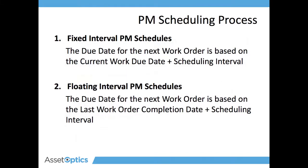There are two types of calendar-based PM schedules: fixed interval and floating interval. For a fixed interval PM schedule, the due date for the next work order is based upon the due date for the existing or current work order plus the scheduling interval. For a floating interval, the due date for the PM is going to be based upon when the last work order was completed plus the scheduling interval. It is recommended that you use fixed interval PM schedules for things like daily and weekly checklists, whereas floating intervals are more appropriate for longer-term jobs.